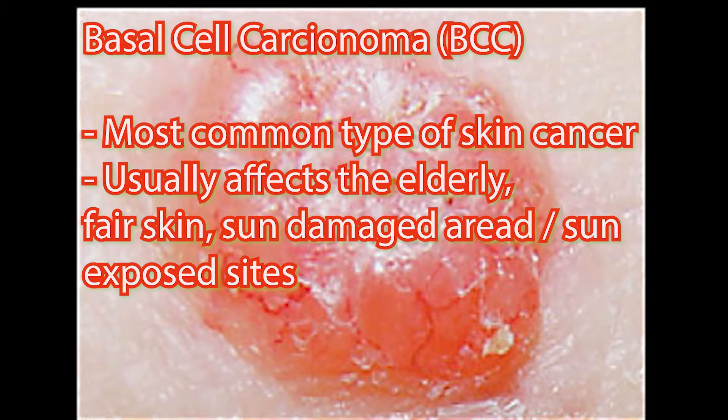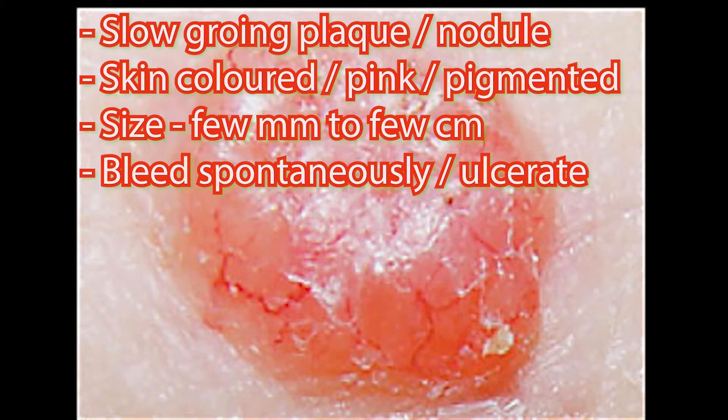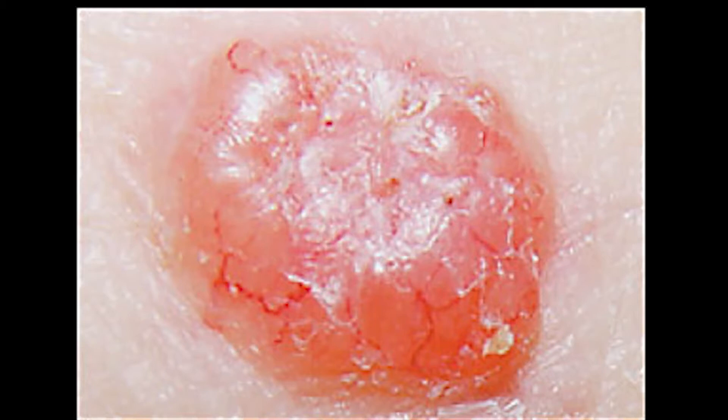The first form of skin cancer is a basal cell carcinoma. It's the most common type and it particularly affects the elderly, those with fair skin, and those with sun-damaged skin or areas with excessive sun exposure. It's a slowly growing plaque or nodule. It can be skin-coloured or pigmented, as you can see from this picture. It varies in size from a few millimetres to several centimetres in diameter, and it can bleed spontaneously, and ulceration may occur.